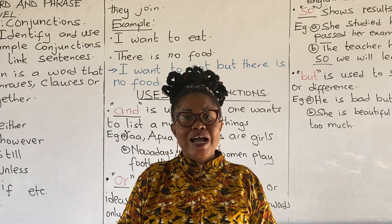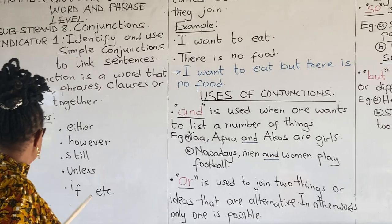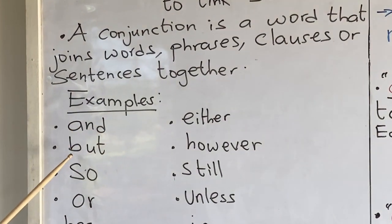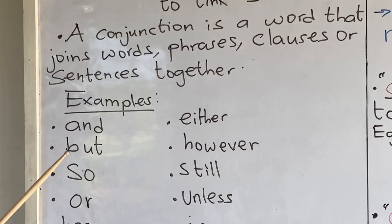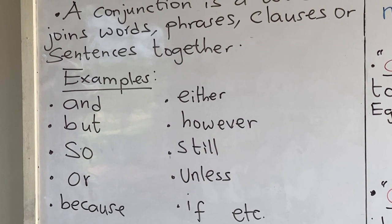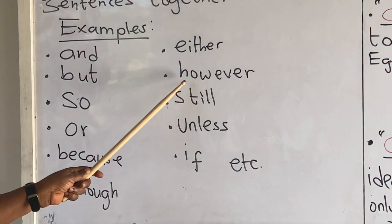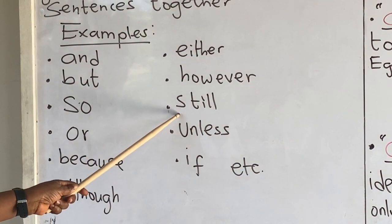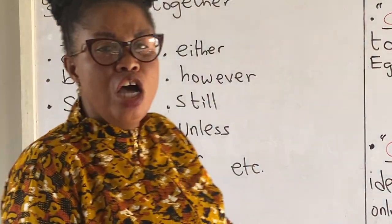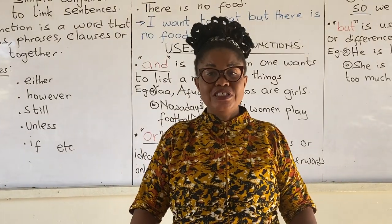We have different kinds of conjunctions. So let's look at a few examples of them. Examples: and, but, so, or, because, although, either, however, still, unless, if, and a whole lot of them.